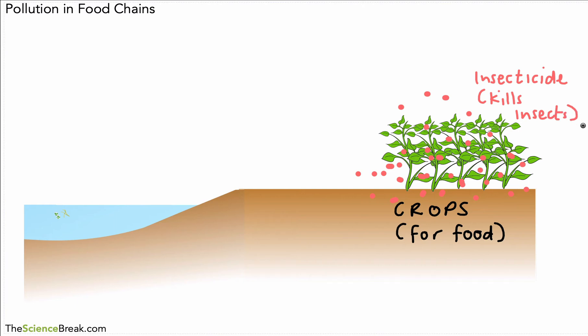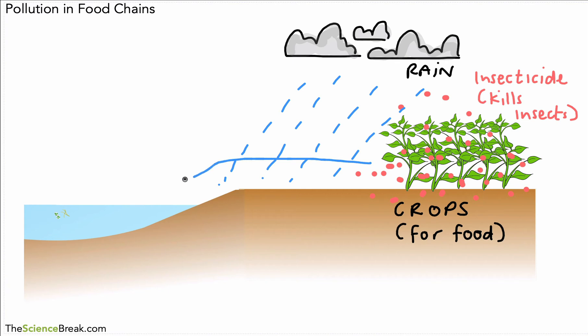Now that's all well and good in one way, but what can happen at some point is we get some rainfall which falls on the field where the crops are, where the insecticide is. What can happen is that rain can end up washing the insecticide into water. That insecticide can be washed into water. Now by water we mean rivers or lakes.